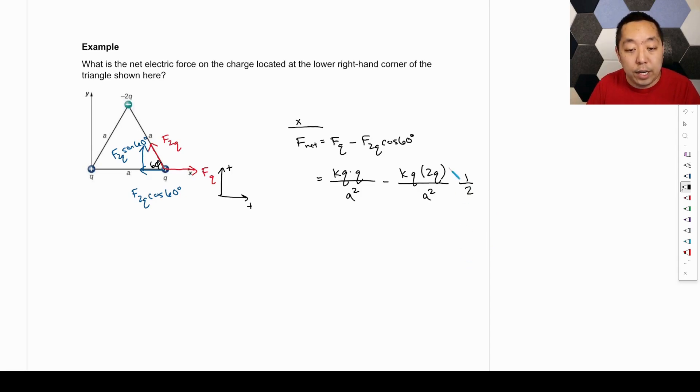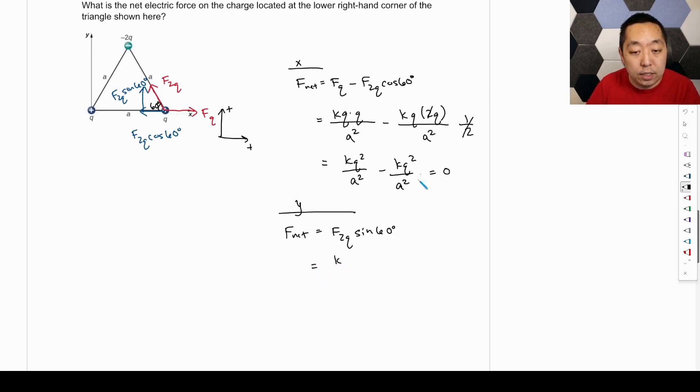And so then this is going to cancel with that guy. This is going to be KQ squared over A squared minus KQ squared over A squared. And so that's going to be zero in the X direction. So interesting. Now in the Y direction, we only have one component in the Y direction. That's the F2Q sine of 60 degrees. And so then that's going to be K. It's going to be the same as this guy. Q times 2Q over A squared. But then the sine of 60 degrees is going to be root 3 over 2. Or you could just put in the decimal. It's fine. That will cancel with that guy. So we're going to get root 3 KQ squared over A squared. That would be the net force. And because we only have a Y component, that is our overall net force. If we wanted, if we had an X and a Y component, we would do vectors, add them up magnitude and direction, just like we would if you had an X and a Y component. But now we only have a Y component only pointing upwards.